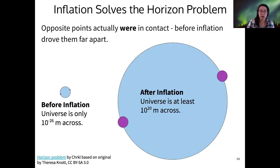How does this solve the two problems? The idea is that before inflation, if your universe is only 10 to the minus 26 meters across, then every single part of it is within thermal contact. They were at the same temperature. Right at that moment of inflation, everything is essentially in thermal contact and can be the same temperature.